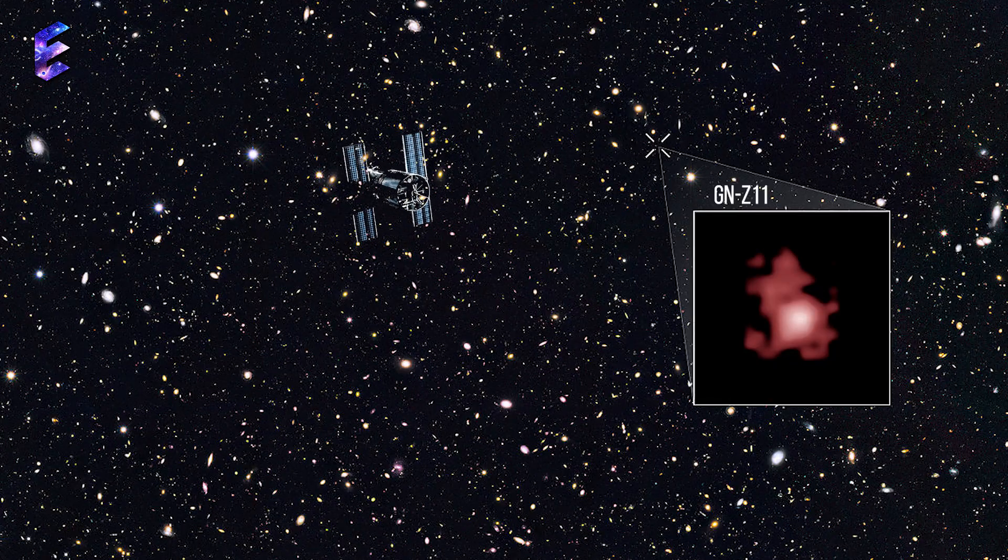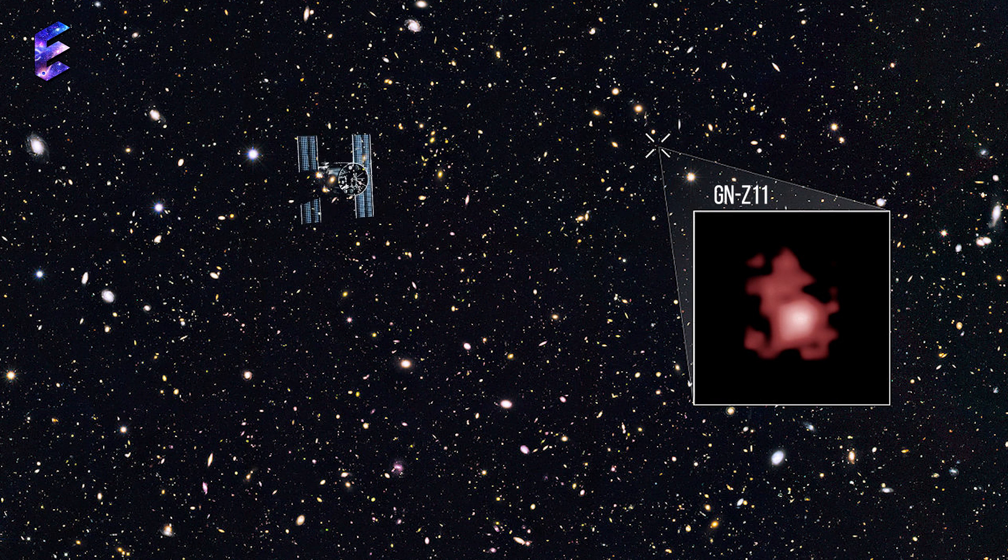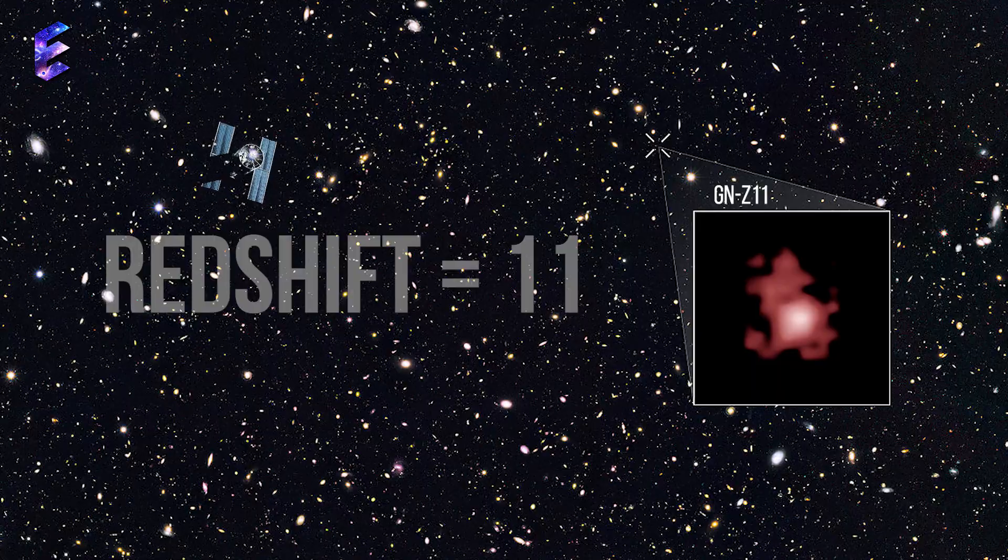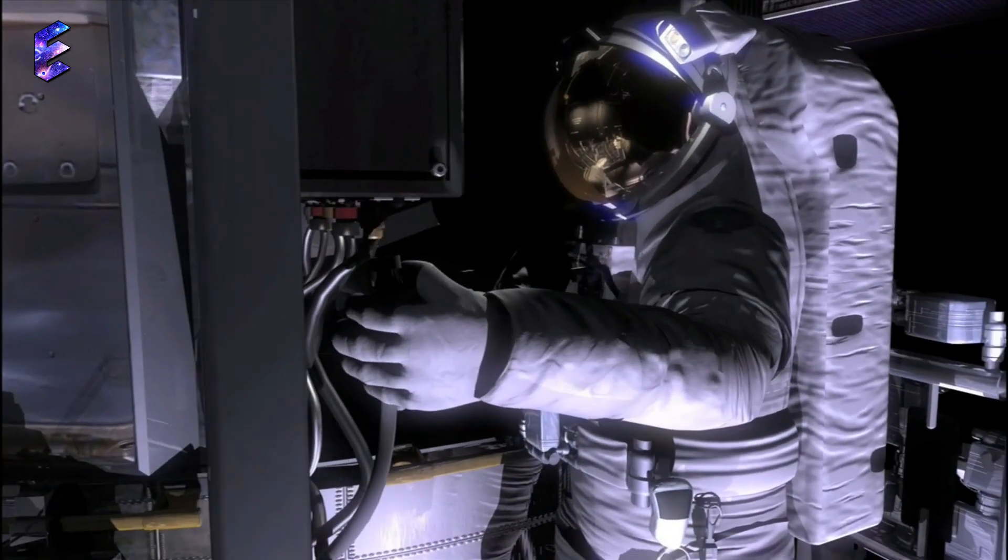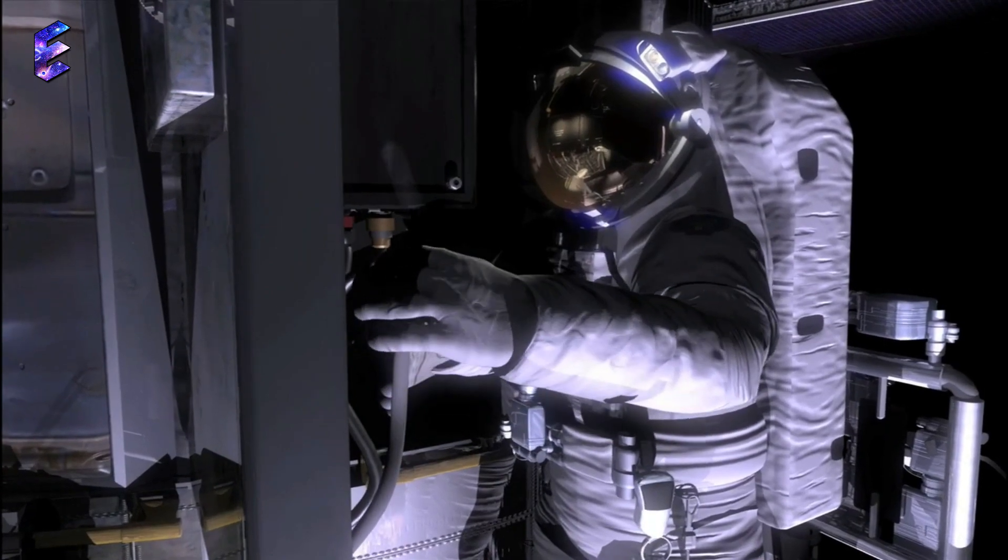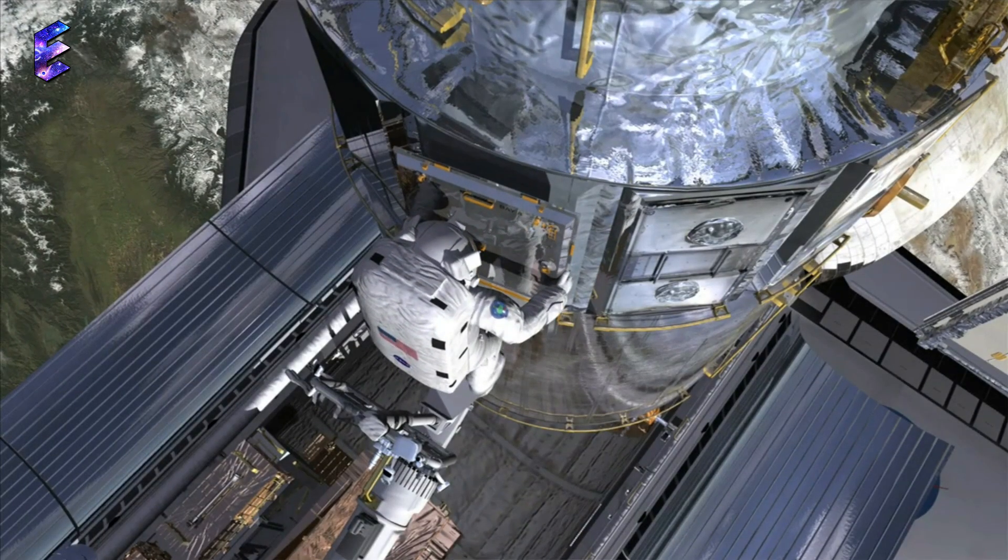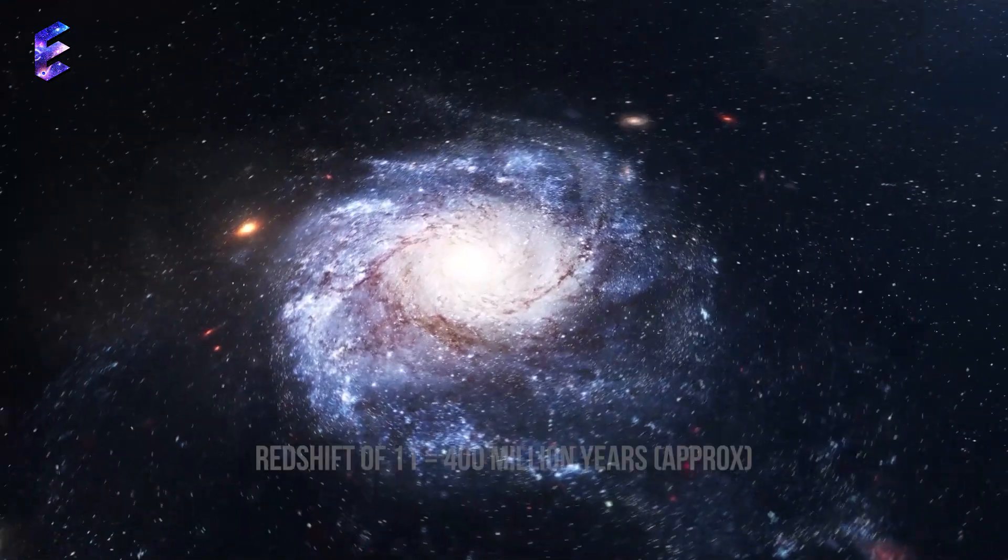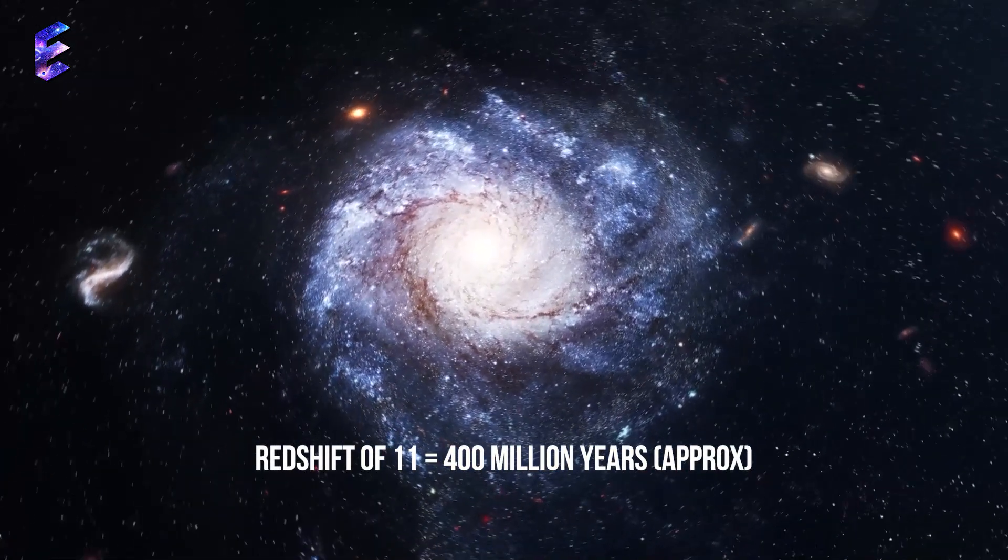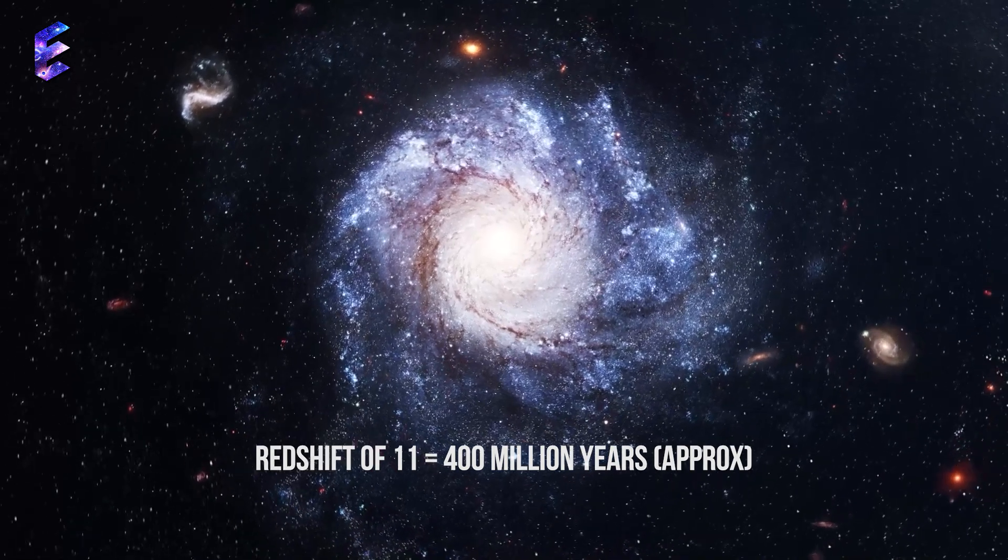Hubble's record for the most distant known galaxy had been GNZ 11, spotted in 2015, at a redshift of 11, thanks to a 2009 upgrade to the telescope that enhanced its modest infrared capabilities. At the cusp of when galaxy formation was supposed to start, a redshift of 11 corresponds to a cosmic age of about 400 million years after the Big Bang.